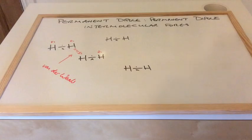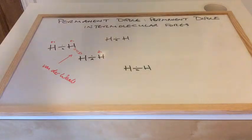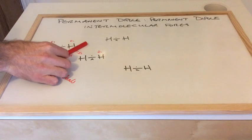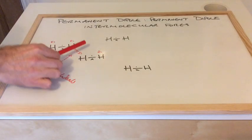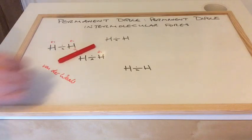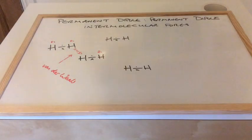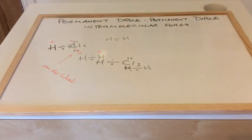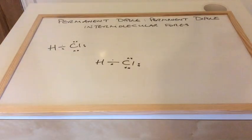It's a very very weak intermolecular force — very easy to break this force of attraction between the molecules, not the bonds, but the intermolecular forces. And so hydrogen has a very very low boiling point.